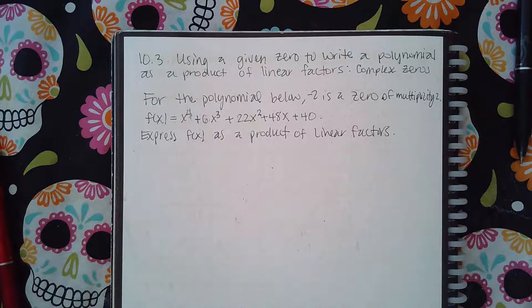Here we have using a given zero to write a polynomial as a product of linear factors, complex zeros. For the polynomial below, negative 2 is a zero of multiplicity 2. Express f of x as a product of linear factors.